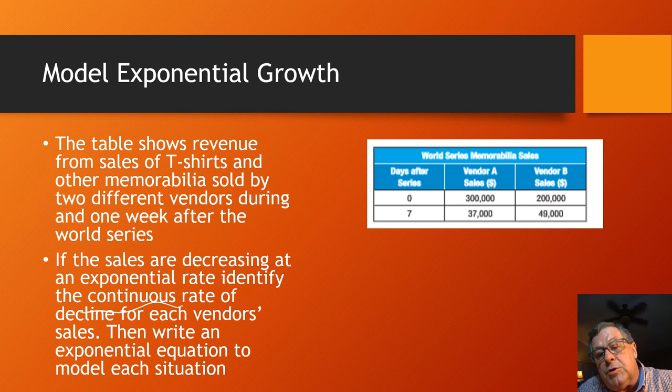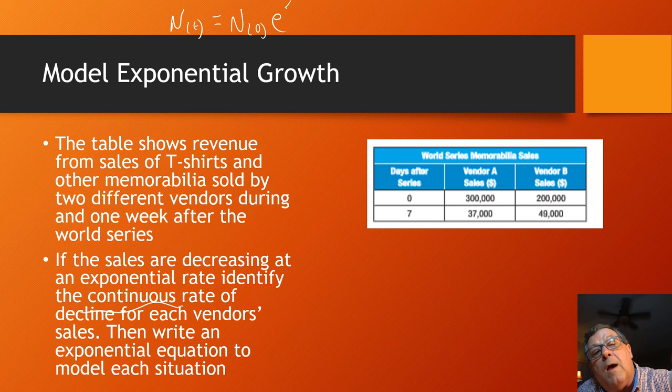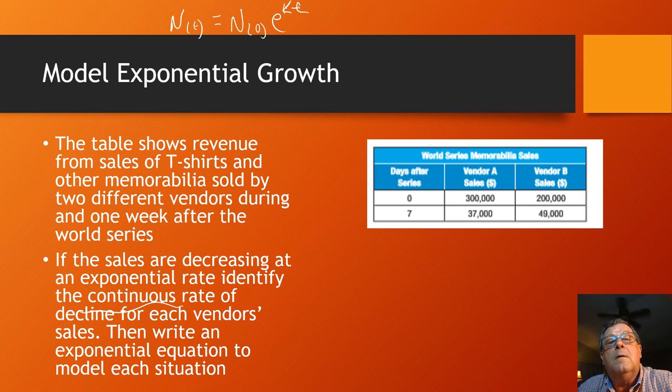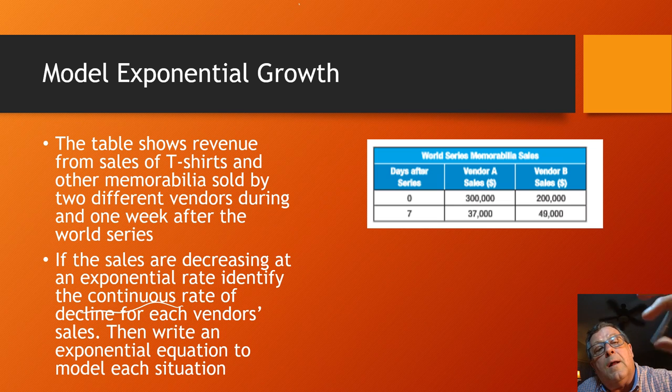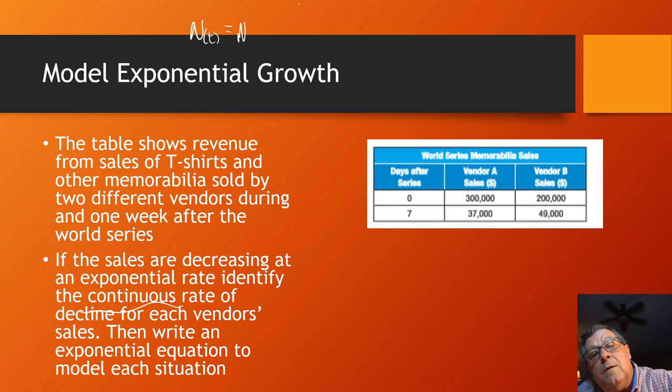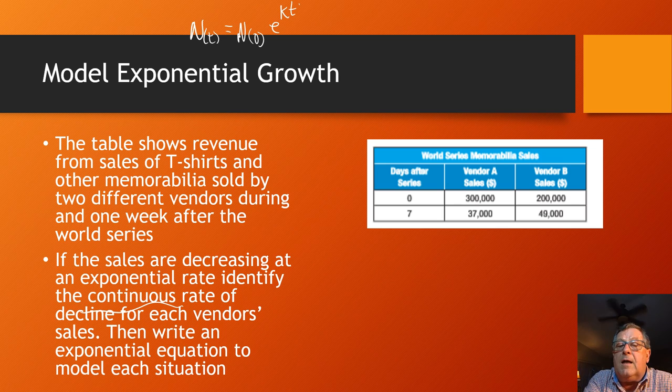Now, I've probably got to think back to what that continuous rate of growth or decay is. And if you remember, let's say n, we're going to call it t for time, equals n₀ times the natural base raised to the power of k times t. Let's see if I can write that a little bit better. So n(t) equals n₀ beginning raised to the natural base, times the natural base raised to the power of k times t. All right, so we've got enough at least to figure what our rate of decline is and write an exponential equation.